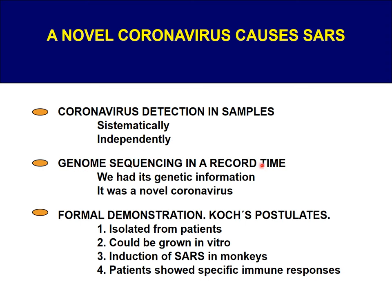We could sequence the genome in record time — approximately two months. We have to remember that this was 20 years ago; it's not like nowadays where we can sequence thousands of coronavirus genomes in a couple of days. The technology has advanced quite a lot. We had its genetic information and found it was a novel coronavirus. We could demonstrate that this coronavirus was causing SARS because it fulfilled Koch's postulates: it could be isolated from patients, grown in vitro, it induced SARS in monkeys, and patients showed specific immune responses against the virus's proteins.